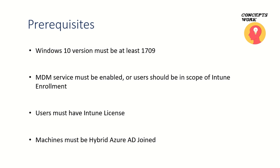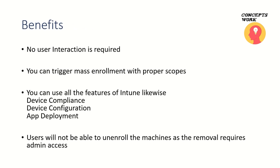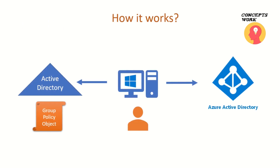What are the benefits? There is no user interaction required to get a machine onboarded to Intune, because you're doing this via a Group Policy Object. Since you are doing this from a GPO, you can trigger a mass enrollment as well. You can use device compliance policy, device configuration policy, and do app deployment — anything Intune has to offer. A standard user who doesn't have admin access on their machine will not be able to unenroll the device from Intune either.